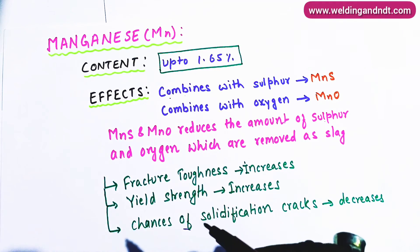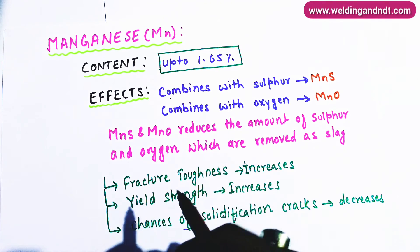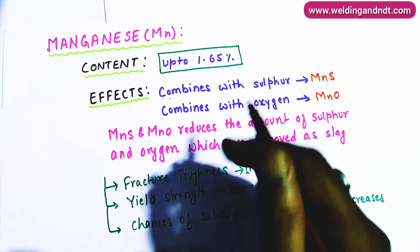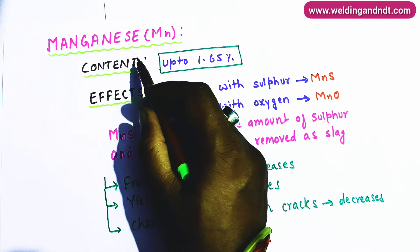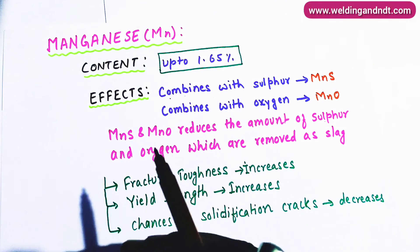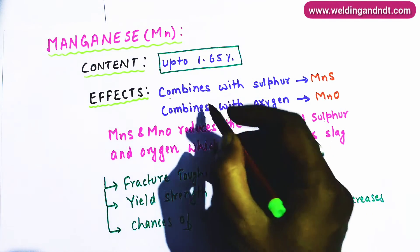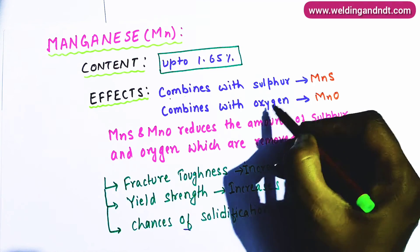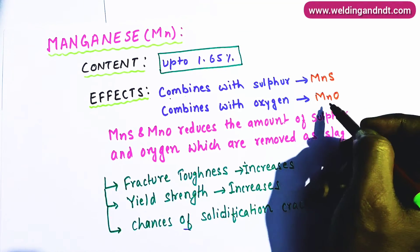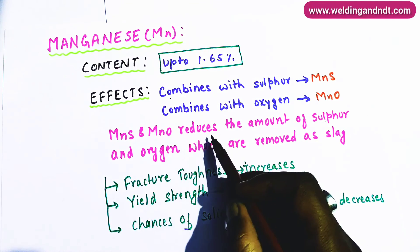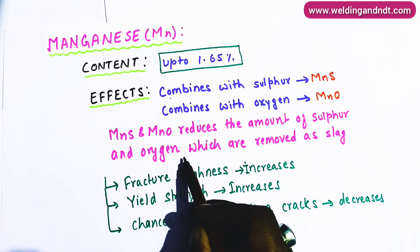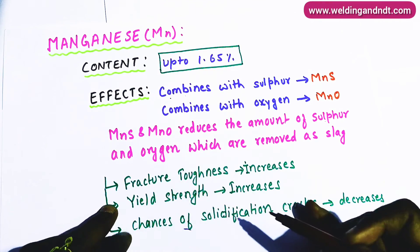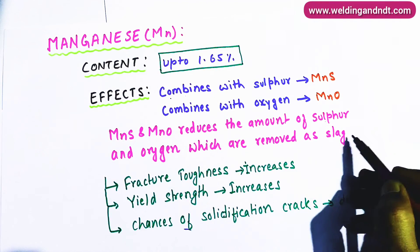Oxygen is very dangerous for iron because it oxidizes the iron and causes many ill effects, so oxygen should be avoided. Manganese combines with sulfur and oxygen and forms separate products MnS and MnO, which reduce the amount of sulfur and oxygen in the steel. These MnS and MnO are also removed as slag.